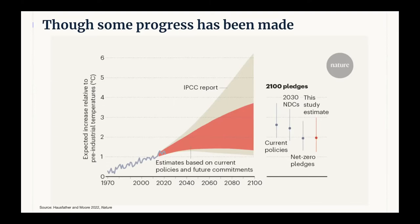This figure, from a piece I published in Nature with Fran Moore at UC Davis, shows the full range of outcomes in the most recent IPCC report — the gray envelope — as well as a narrower range consistent with current policies and future commitments. Countries representing over 75 percent of global emissions have committed to get to net zero by the middle or latter half of the 21st century. If all those commitments were met — a big 'if' — we would limit warming to just under 2 degrees as a best estimate, which itself is a big change from where we were just a few years ago.